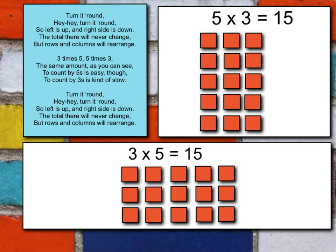The rows and columns just rearrange, but they don't change. So here we have three rows and over here we have three columns. But like the song says, to count by fives is easy, but to count by threes is kind of slow. If I count by threes: three, six, nine, twelve, fifteen. Now let's go over here: five, ten, fifteen. Just think about it — which way is easier for you to count, by threes or by fives? Whatever is easiest for you. But you can turn it around — that's the commutative property. The factors change order here, but the product does not change.